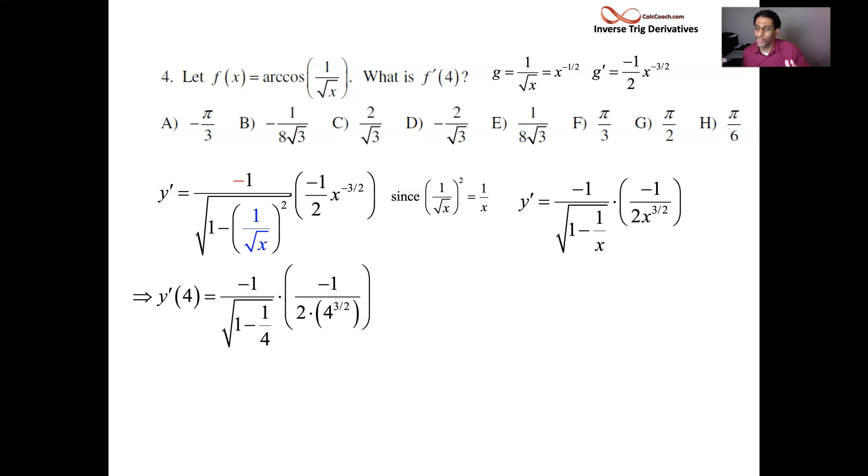1 minus 1 fourth is 3 quarters. The square root of 3 fourths is going to be root 3 over 2. 4 to the 3 halves is like taking the square root of 4 and cubing it. So, it's 2 cubed. That's an 8.